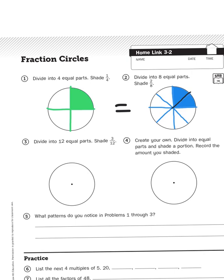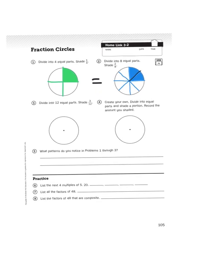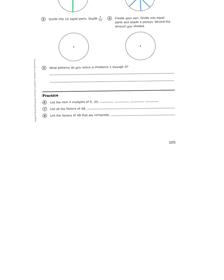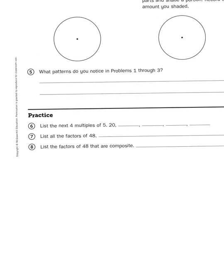So when you go to solve problem number three, dividing the circle into twelve equal parts, then shading in three twelfths, you're going to run into some similarities with the first two problems. I'll let you do that on your own, along with number four, create your own problem, divide into equal parts, and shade a portion. You can do that on your own. Now, let's go ahead and take a look at the practice problems down at the bottom.